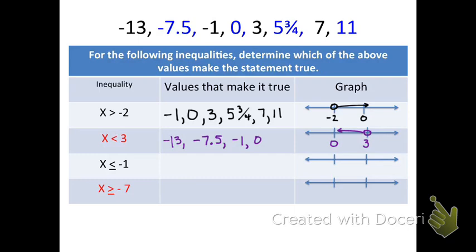The third example says x is less than or equal to negative 1. The values less than or equal to negative 1 are negative 13, negative 7.5, and negative 1. When graphing, use the values negative 1 and 0. Place a circle on negative 1 — since it's less than or equal to, color the circle in. That's what a colored-in circle looks like, and then the arrow heads to the left.